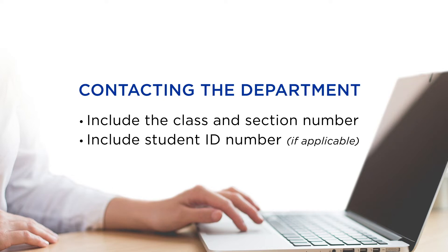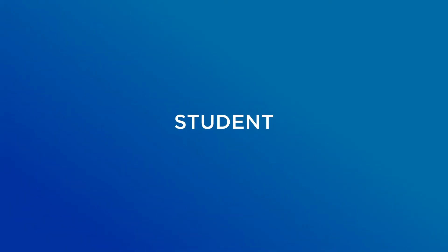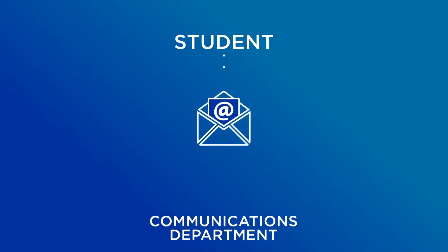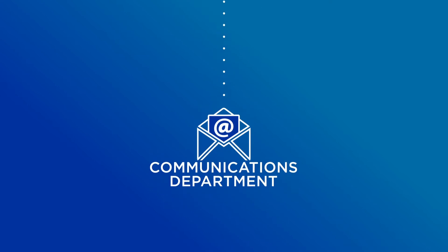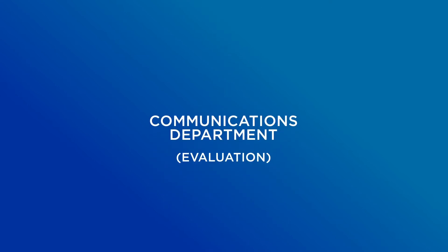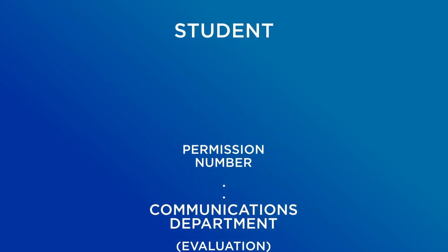When you contact the department, include the class and section you are hoping to get a permission number for, as well as your student ID number if you have one. The first step is to contact the academic department who owns the class to get a permission number. For example, contact the communications department for a permission number for COM 302. If you are a non-degree-seeking student, the department may want to see a copy of your transcript showing that you've met the prerequisite somewhere else.